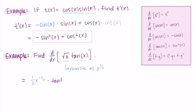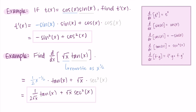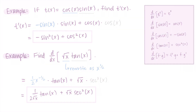Using the power rule on x to the one-half, I'm left with (1/2)x to the negative one-half. I multiply it by tangent left on its own, then add the square root of x left on its own multiplied by the derivative of tangent, which is sec²x. I'll clean it up by rewriting the negative exponent: (1/2)x^(−1/2) becomes 1 over (2√x). So my final solution is (1/(2√x)) · tan(x) + √x · sec²x. That's the derivative using the product rule. Thanks so much for watching!